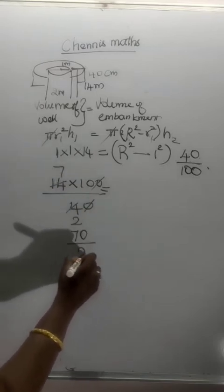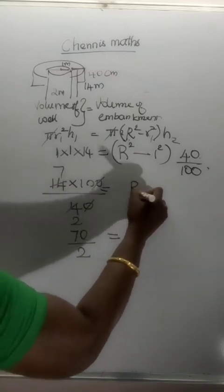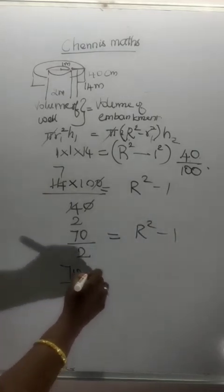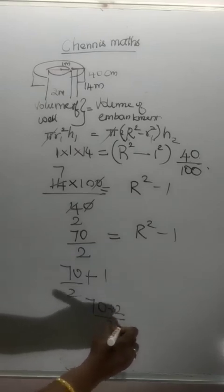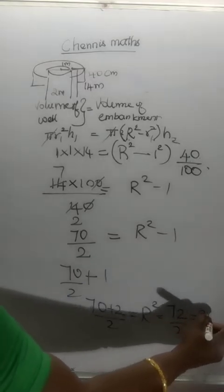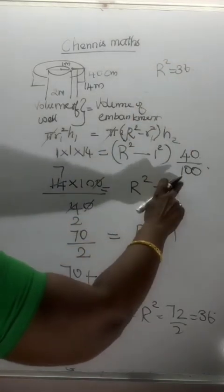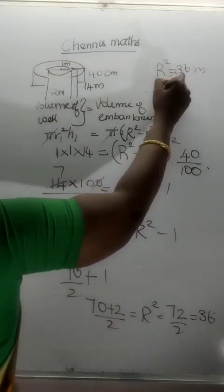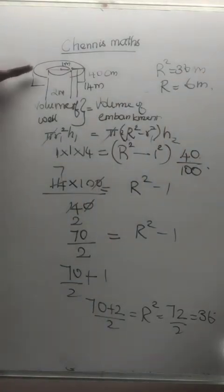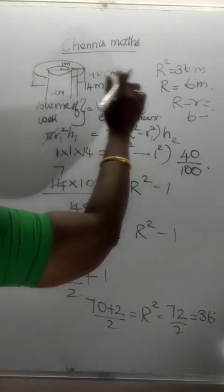R1 squared is equal to 14 into 100 divided by 40. This simplifies — cancel 2 times, giving 70 by 2. So R squared minus 1 equals 70 by 2. Therefore R squared equals 70 by 2 plus 1, which is 72 by 2, equal to 36. So R equals 6 meters.